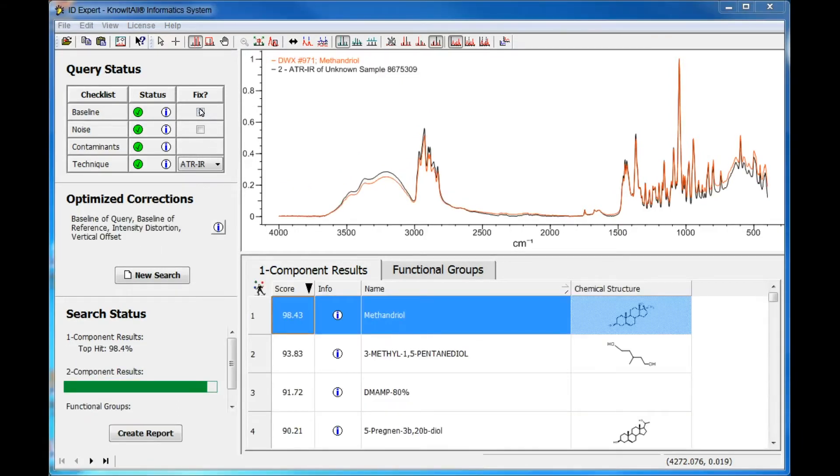The software then automatically applies a series of optimized corrections to both query and reference spectra to identify the best matches in the database. Any optimized corrections made are listed. In this case, the bad baseline was corrected in both the query and reference spectra, and several other corrections were also applied. Click the Information icon to get more specific information on each correction performed.